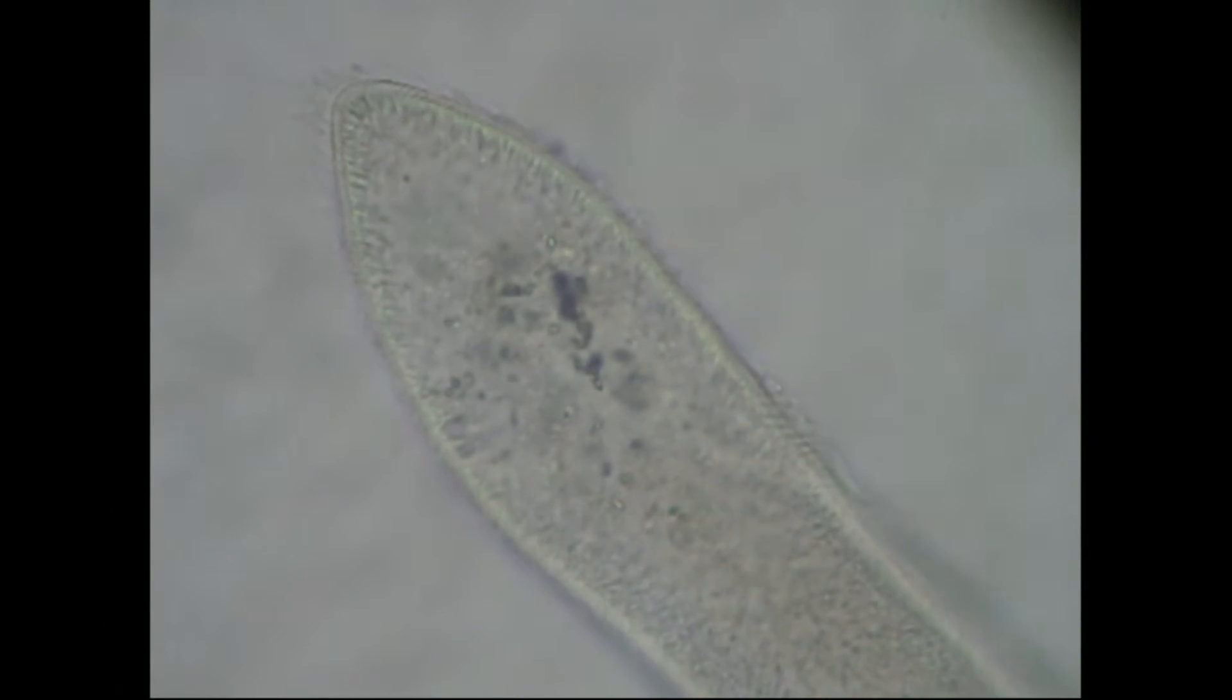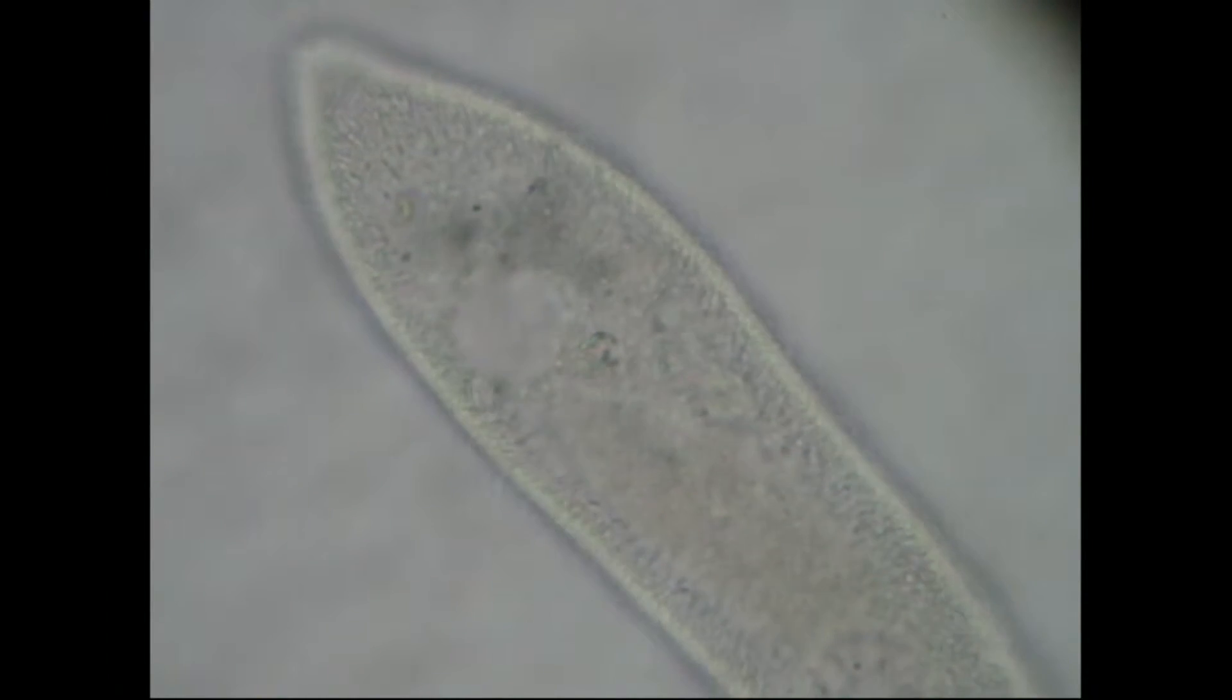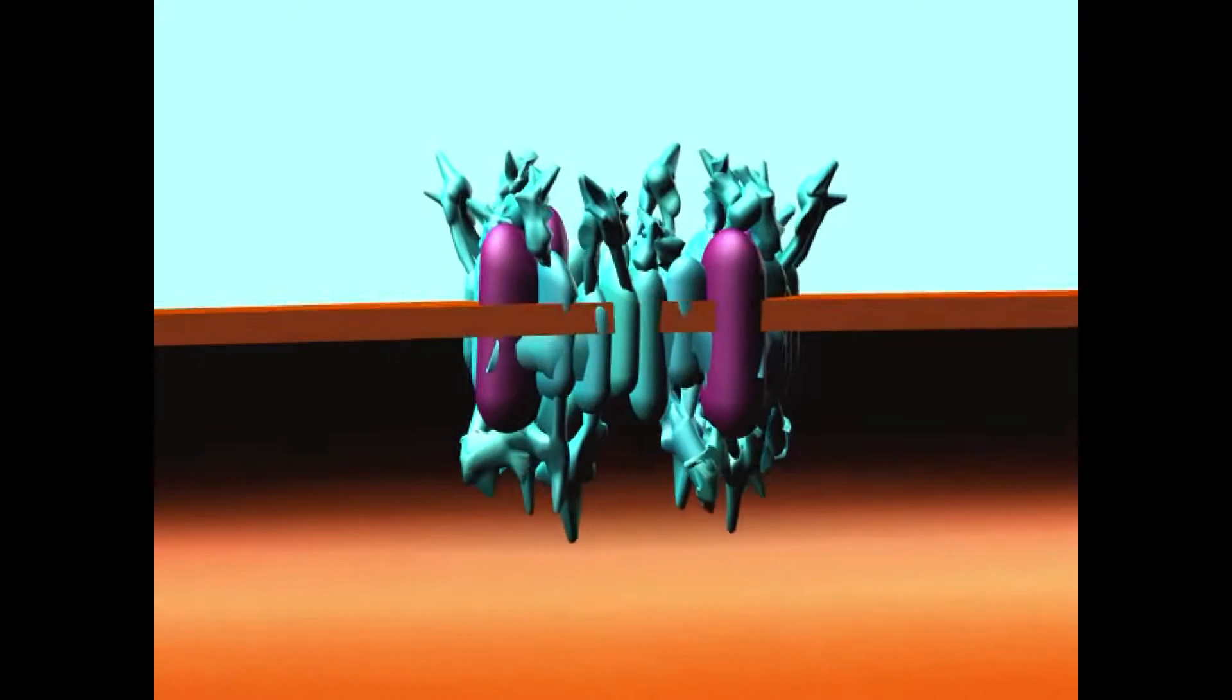There are forms of this channel in protists alive today which are permissive to both calcium and sodium, which seem to be similar to the ancestral form of this more complex gene.